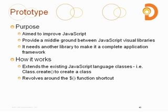Prototype is aimed to improve JavaScript. By itself it doesn't have a visual set like Scriptaculous, but it provides a middle ground between just doing plain JavaScript development and the visual libraries. It actually uses a base language for Scriptaculous and also for another library called Rico that does visual effects. It kind of extends the JavaScript library classes — you can do classical inheritance and class-style OOP. You can do class.create and develop your own objects, letting you do object-oriented programming in ways that programmers are used to.